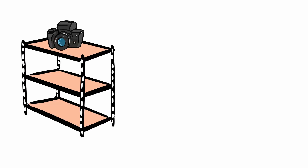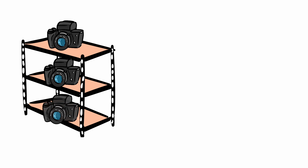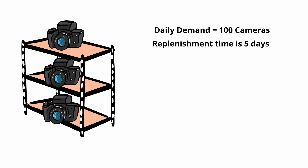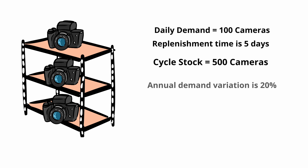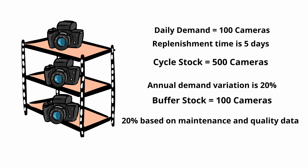Practical example. Let's consider a finished goods warehouse, such as cameras. Suppose the daily demand is 100 cameras and replenishment time is 5 days; therefore the cycle stock will be 500 cameras (100 by 5). If the annual demand variation is 20%, the buffer stock will be 20% of 500, equal to 100 cameras. For the safety stock, assuming a percentage of 20% based on maintenance and quality data, we will have 20% of the sum of cycle stock and buffer stock, which is 120 cameras — 20% of 600.